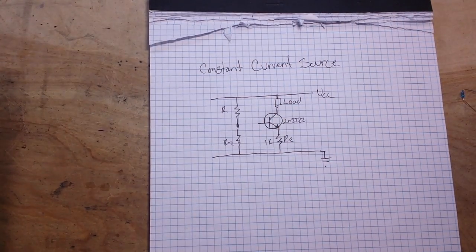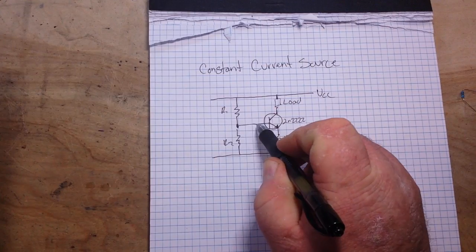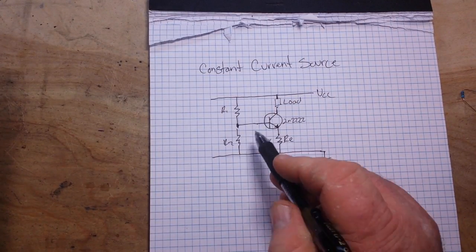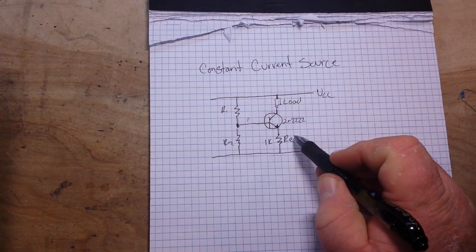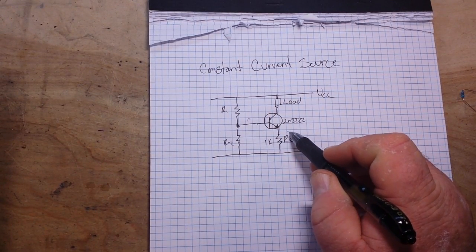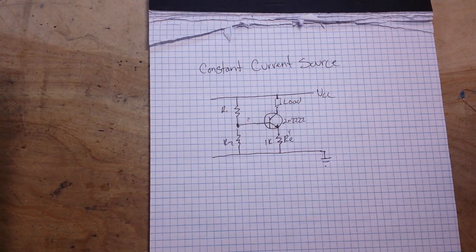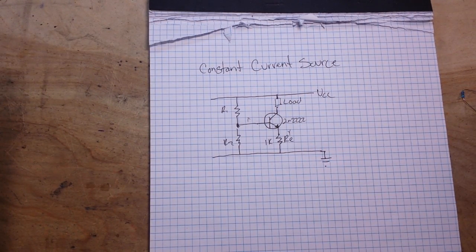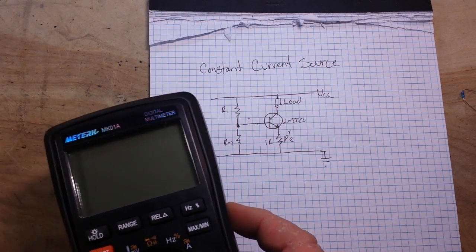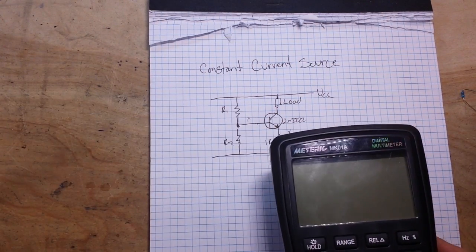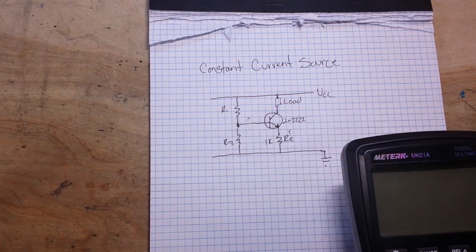The only other thing we need is a voltage divider R1 and R2 to feed the base. Because we know that if we give the base current X, we're going to get current Y from the emitter and it's going to be constant regardless. This is how we build ourselves a constant current source.